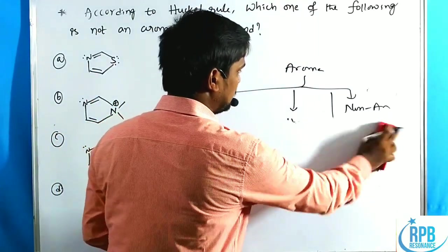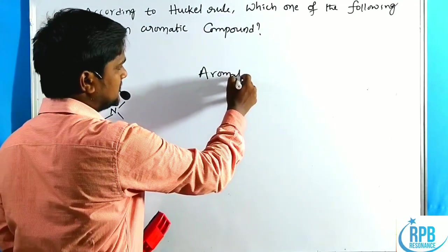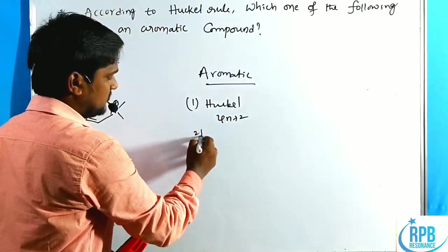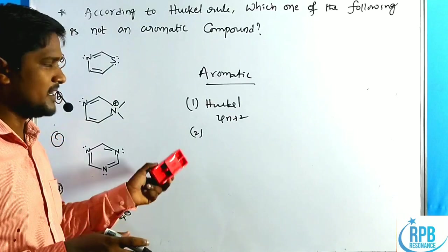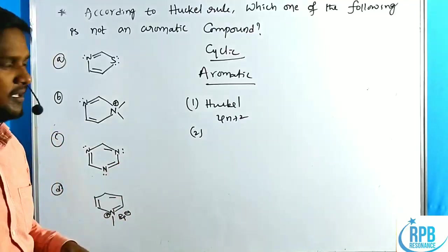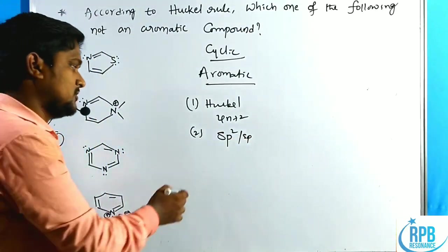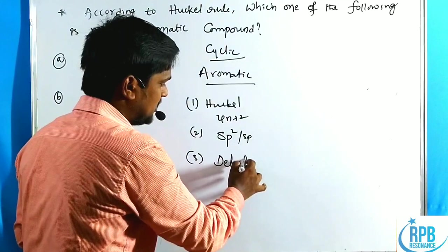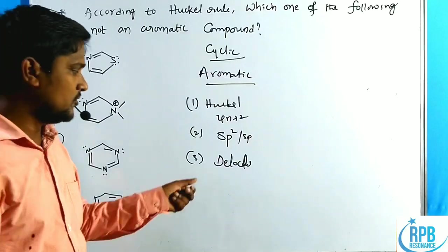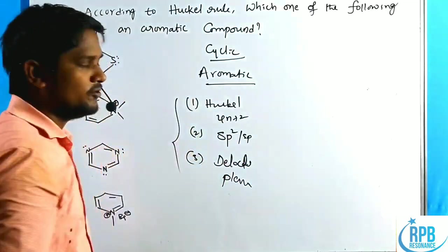The general rules for aromaticity: first, the Hückel 4n+2 pi electron rule must be satisfied. The compound must be cyclic. All atoms involved must be sp2 hybridized (sometimes sp hybridization is also possible). Third, all electrons must be delocalized — meaning it is a planar compound. When all three of these rules are satisfied, the compound is said to be aromatic.